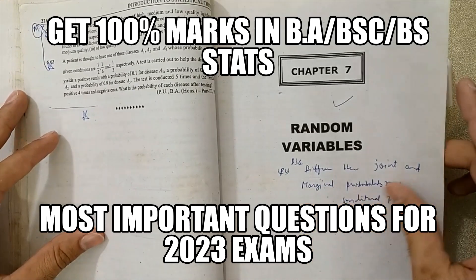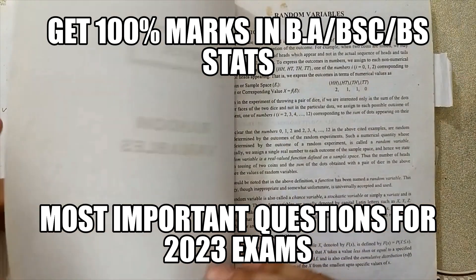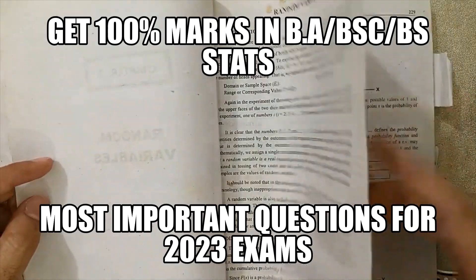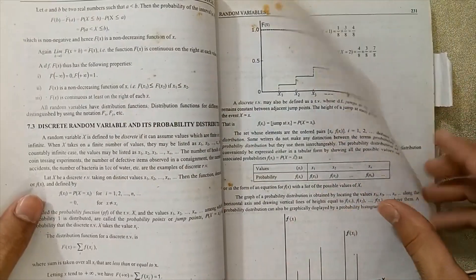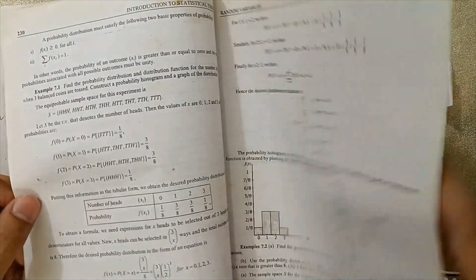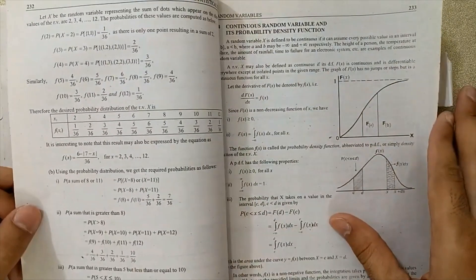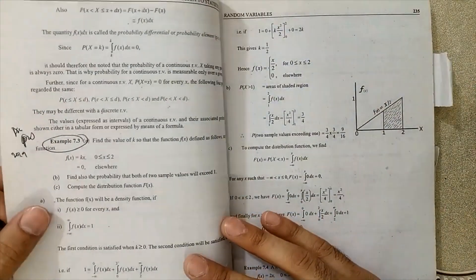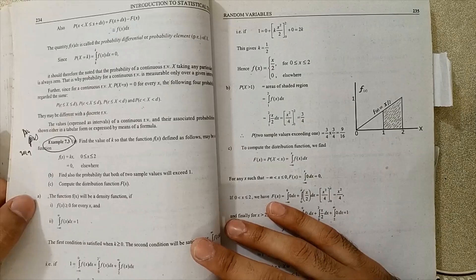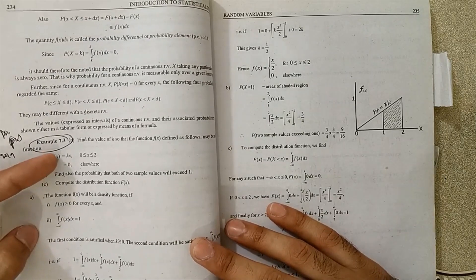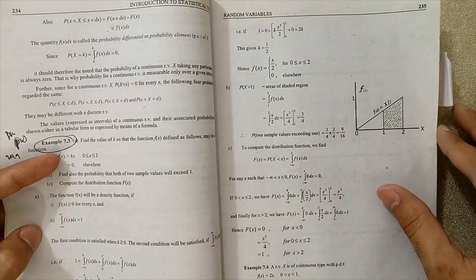Chapter 7 on random variables - this chapter is very important for you. At page number 234, example 7.3 is very important for exams.